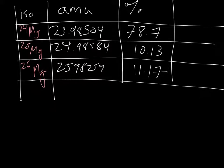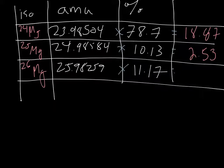So these again just coming from the original problem. Now what I'm going to do is I'm going to multiply this number by this number to give me whatever this is. Let's say when I multiply these together, I get 18.87. When I multiply this by this, I get 2.53. Same thing, multiply these two across, and I get 2.90.